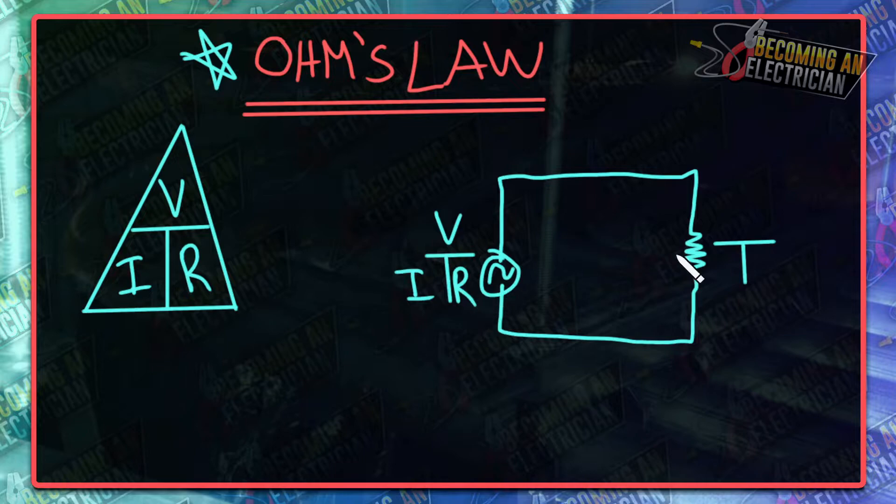When you want to find the value of any of these spots, all you have to do is, for example, if you want to find resistance, divide voltage by current and it gives you resistance. If you want to find current, go voltage divided by resistance. If you want to find voltage, multiply current times resistance.